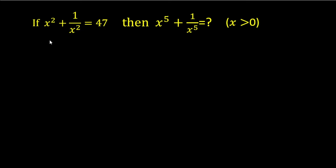Hey friends, welcome back! Today in this video we'll solve this algebraic problem: if x squared plus 1 over x squared is equal to 47, then we'll have to find the value of x raised to the power 5 plus 1 over x raised to the power 5, where the value of x is more than 0.